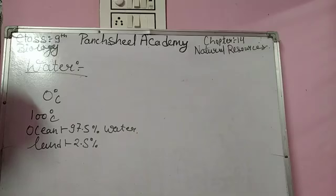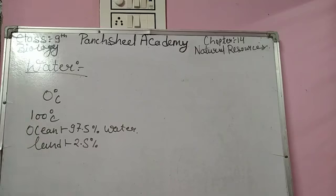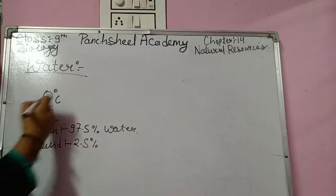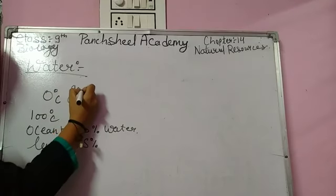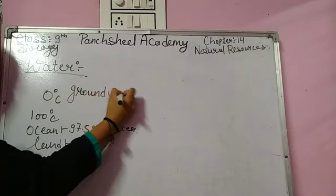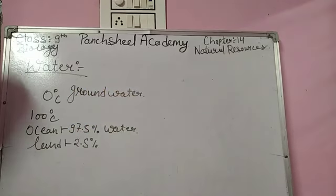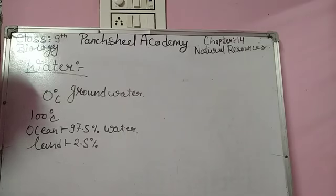The remaining water — that is the 2.5% — is called fresh water. More than 90% of fresh water is found in the form of ground water. Jo 90% water hota hai woh ground water ki form mein hota hai. Baaki 10% jo hota hai woh fresh water ki form mein rivers, dams, lakes, and ponds mein milta hai.